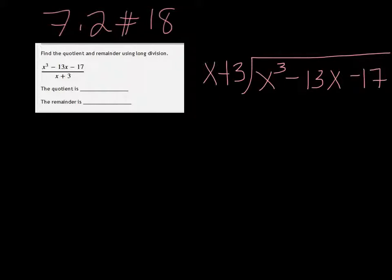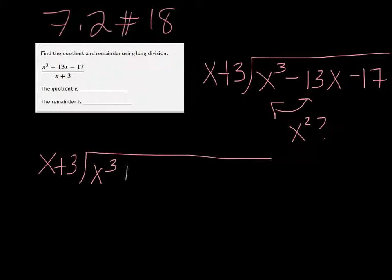So you'll notice that we're missing an x squared here, so I'm going to go ahead and rewrite it, but I'm going to add in a 0x squared, just as a placeholder. You'll notice that I haven't changed the problem, because adding 0 doesn't make anything different.